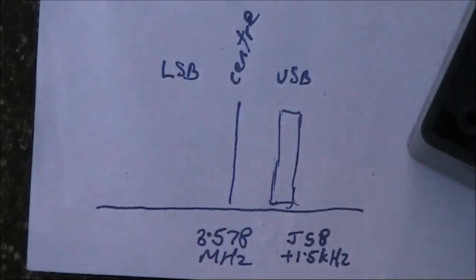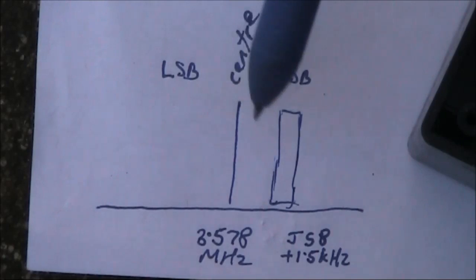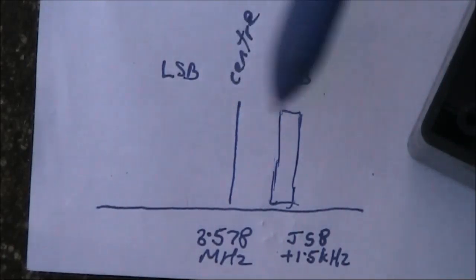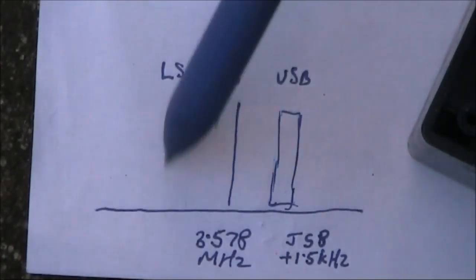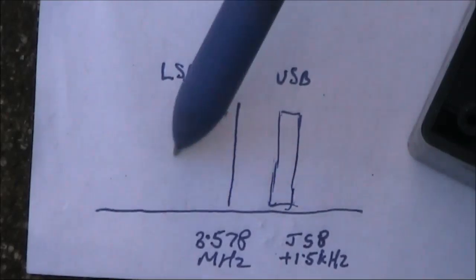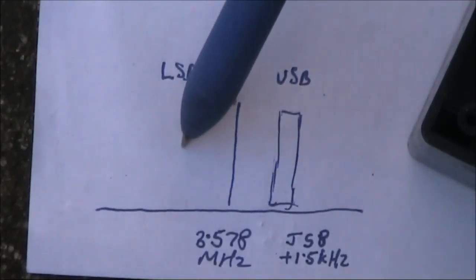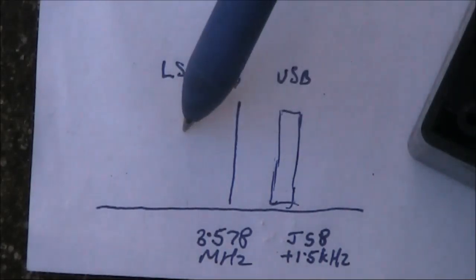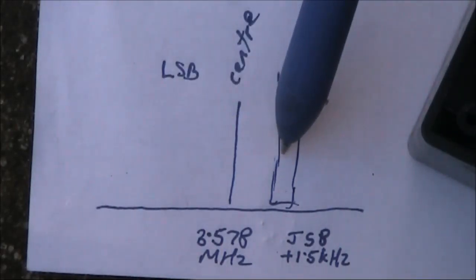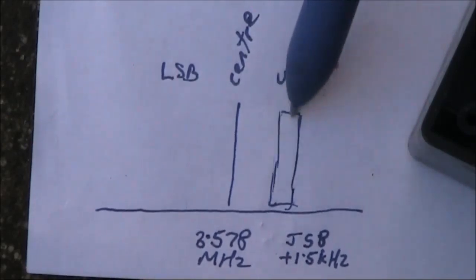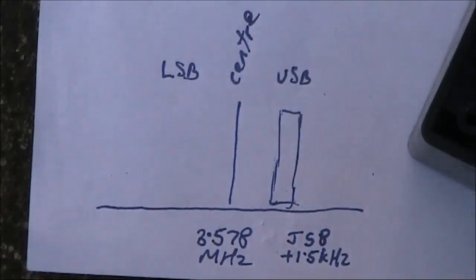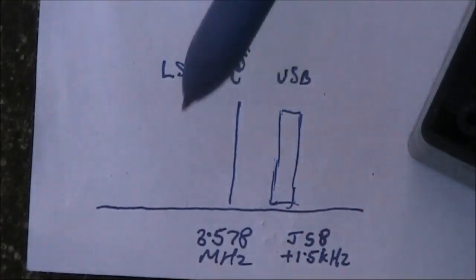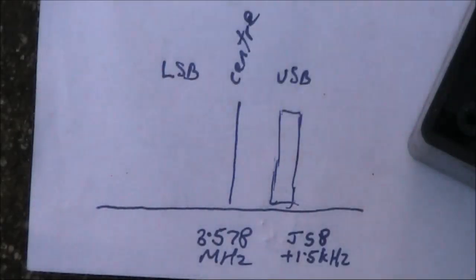The other limitation is because this is a direct conversion receiver with no opposite sideband selection. If a signal appears a bit below, like 3.576 or 3.577, then you'll also be hearing it through. And there's a risk of that interfering with your reception of the desired JS8 signals. You can get around that, but it needs a more complicated arrangement, which I haven't bothered with.